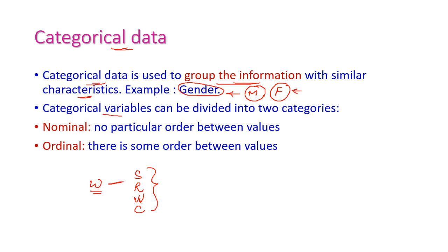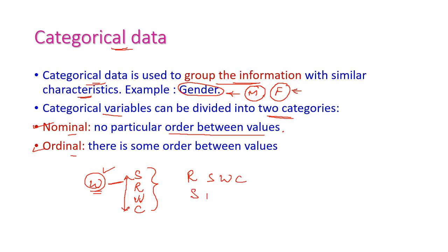The categorical variables can be divided into two categories. The first one is nominal and the second one is ordinal. Nominal means there is no particular order between values. For example, we can take weather again — there is no order of arrangement of these values. We can arrange rainy, sunny, winter, and cloudy, or sunny, rainy, winter, and cloudy. There is no particular order in these values, so this is called nominal.